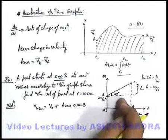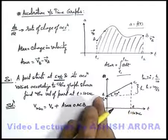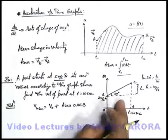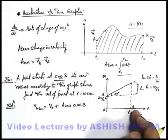This OACB area will be the net change in velocity which we add in the velocity at point b. This will give us the net velocity at point c or at time 10 second.